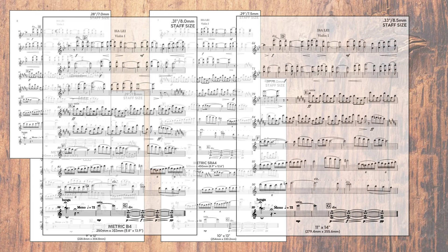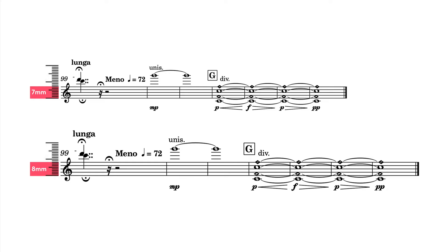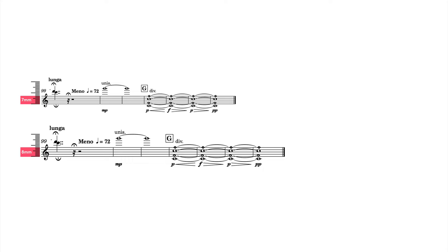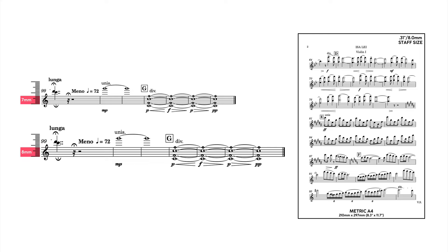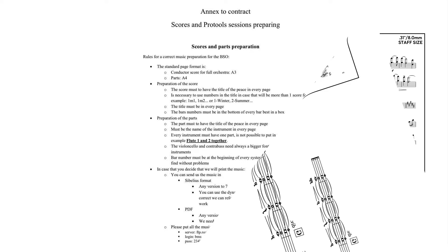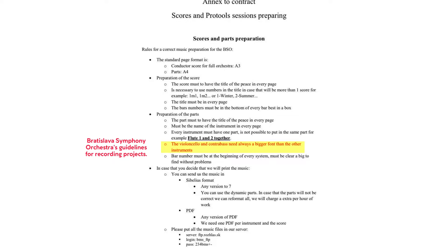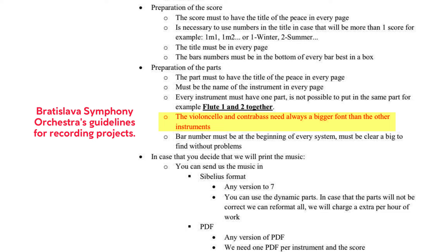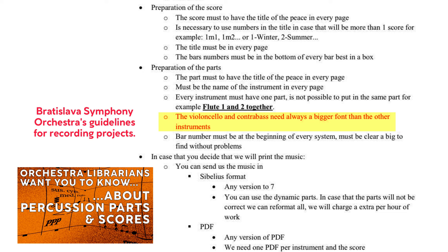When you put a ruler up against staves in a variety of instrument parts, the difference between 7 millimeters and 8 millimeters doesn't seem all that big. But every millimeter matters, especially the further the music stand is positioned away from the player. Nevertheless, I'd avoid putting too large a staff size on too small a page size, because the result is usually a lower density of information on each page and thus more page turns for the musicians. It's worth pointing out that some recording orchestras request that lower string parts be increased in staff size to facilitate reading by cellists and bassists. It's also not uncommon for percussion players to request parts with larger staff and paper sizes, especially for combined percussion scores, which I'll cover in a future video.